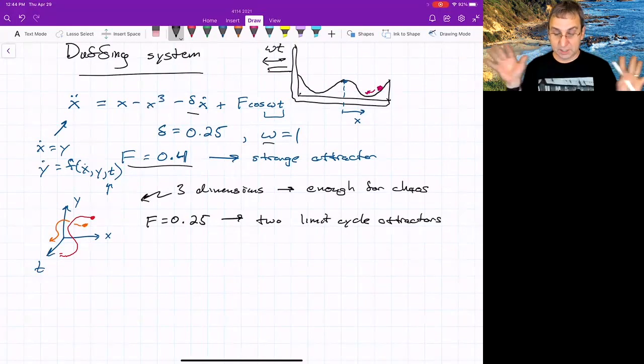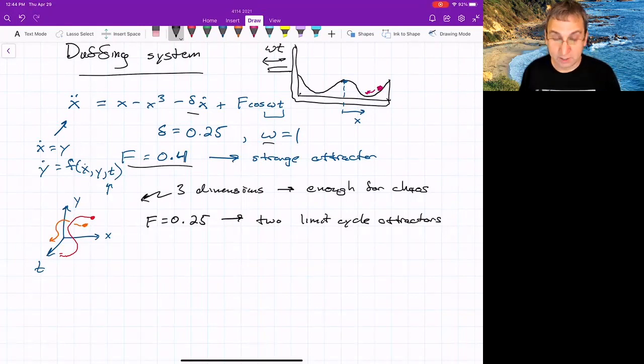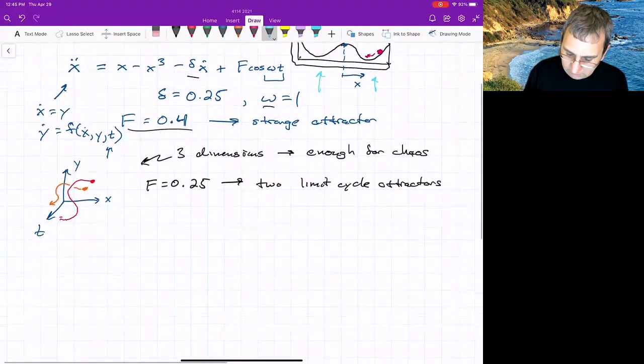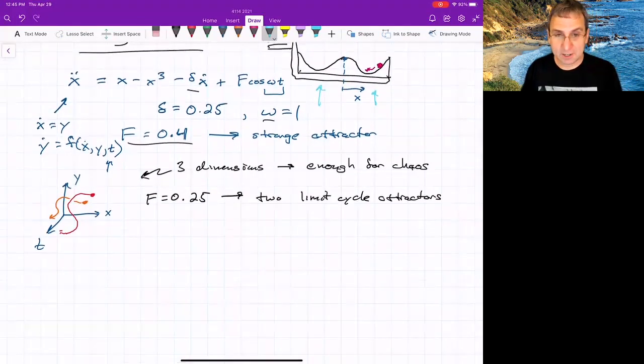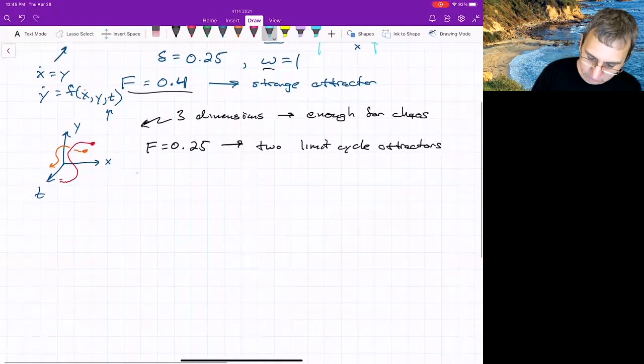If we're just keeping delta and omega the same and just turning F down, then we go away from the strange attractor to two limit cycles. And the limit cycles will be related to these stable equilibria, probably just kind of moving around the stable equilibria. But you get sensitive dependence on initial conditions, but now it's sensitive dependence on where you ultimately end up.